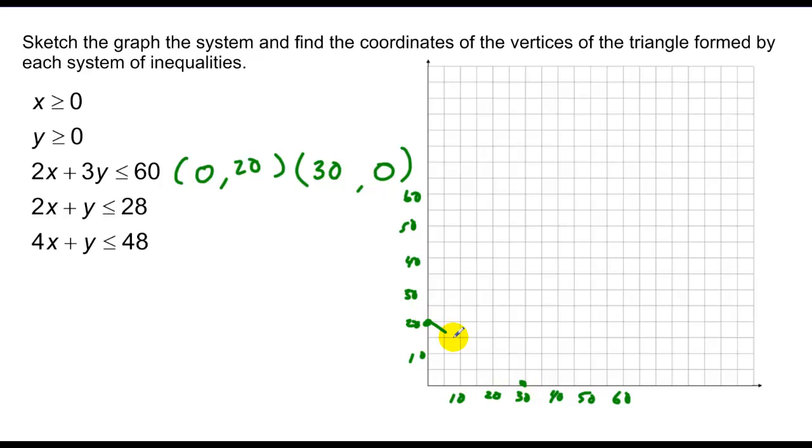So now in this case, we start graphing, and my first graph is at 0, 20 and 30, 0. So I'll graph that. I'll check a sample point of 0, 0. 0 plus 0 less than 60. True, so it shades down here.